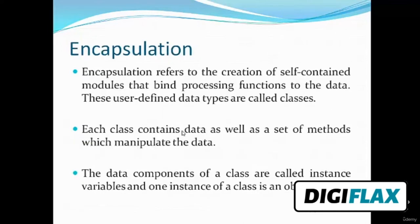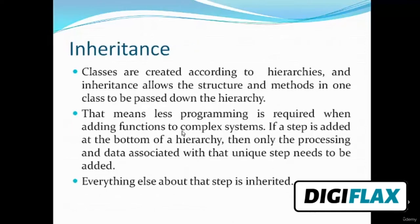Now let's see encapsulation. Encapsulation refers to the creation of self-contained modules that bind processing functions to the data. The user-defined data types are called classes. Each class contains data as well as a set of methods which manipulate the data. The data components of a class are called instance variables, and an instance of a class is an object. Now let's see inheritance. Classes are created according to hierarchies, and inheritance allows the structure and methods in one class to be passed down the hierarchy, meaning less programming is required when adding functions to complex systems. Everything else about that step is inherited.